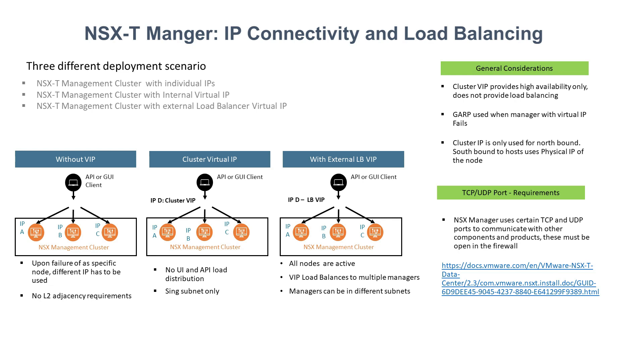Now let's move on to the most advanced option: using an external load balancer. Instead of a cluster VIP, you have an external LB which has a virtual IP. When you connect to that virtual IP, your connection gets redirected to the actual node IP of NSX-T Manager — it could go to IP-A, IP-B, or IP-C. The main benefit is you can load balance requests across all NSX-T Manager nodes using round-robin, for example. With the cluster VIP, requests always go to the bound node — say IP-A — and only fall back to IP-B when IP-A is unavailable. With an external LB VIP, requests are actively load balanced across all nodes.